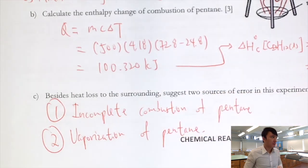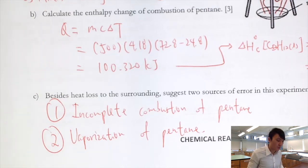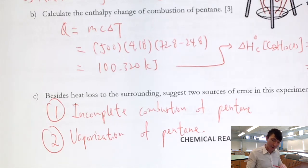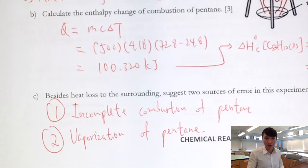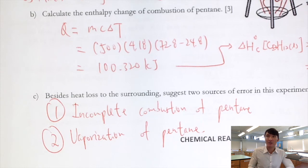So far from this video and the previous one, we have discussed three classic calorimetric experiments. You can see the general approach: write the chemical equation of the reaction, identify the limiting reagent if necessary, find the heat change, then calculate the enthalpy change. Very often we also need to consider sources of error and possible improvements.